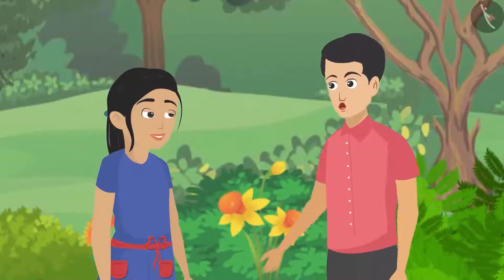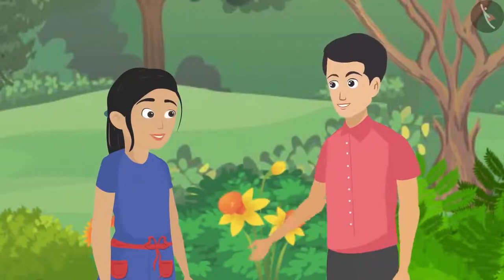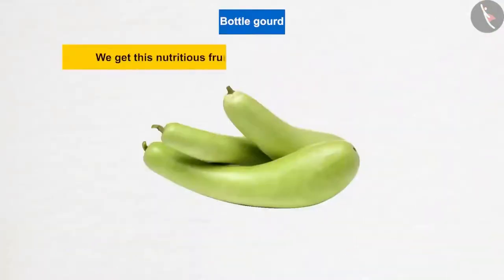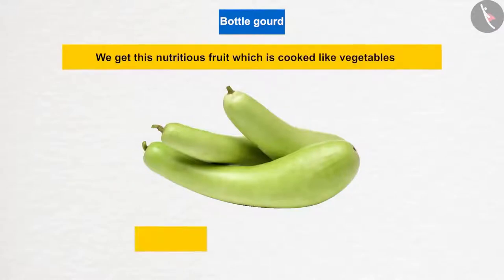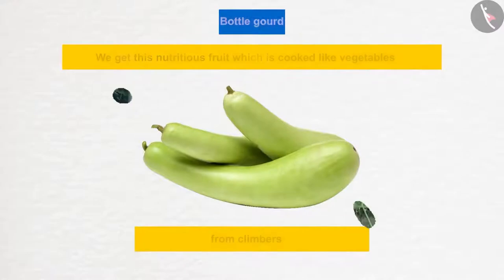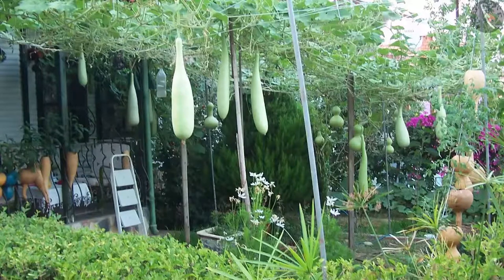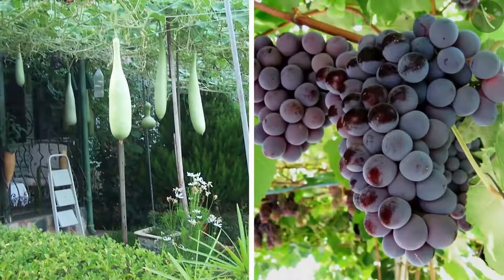From climbers, we get nutritious fruits that are cooked like vegetables. These vines climb up trees, ladders, or other solid structures around them. Bitter gourd is one such example, and grapevine is also a climber.